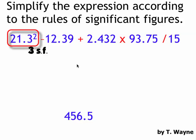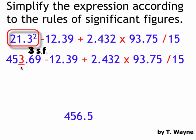21.3, well, that's three sig figs because it's multiplying. So I'm just going to keep track of the sig figs for this multiplication part of it. When I get my final answer, I get 453.69. With three sig figs, that means 453, that's my sig fig.